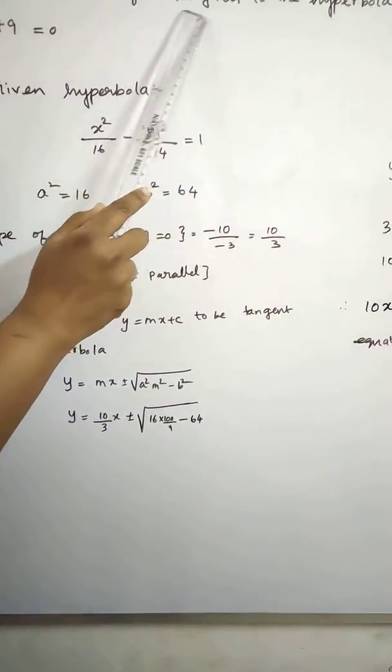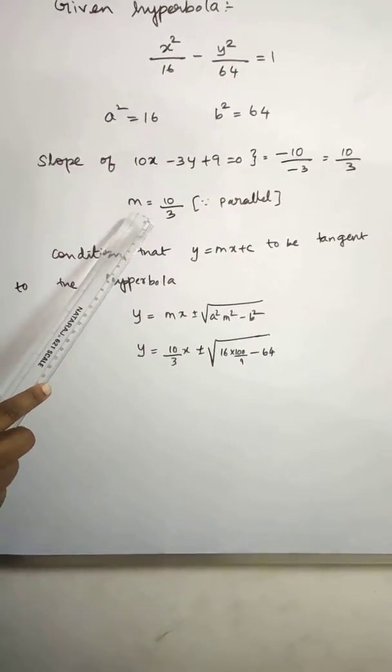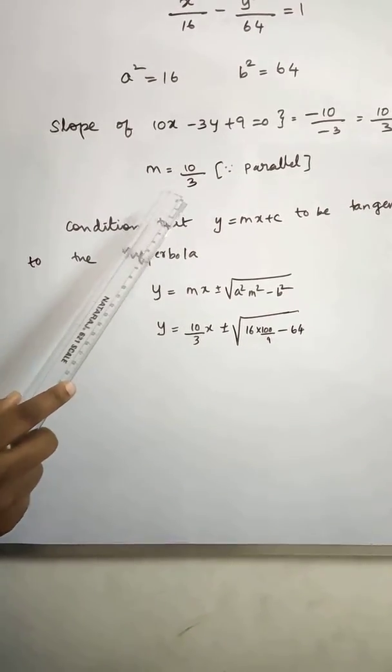Why are parallel? Tangents are parallel to the line, slopes are equal. So tangent slope m is equal to 10 by 3.